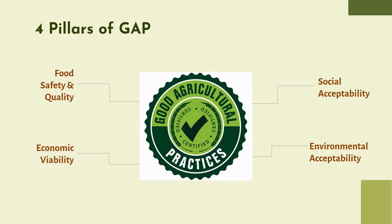Now, there are four pillars of GAP. First is food safety and quality. Second, social acceptability. Next, we have environmental acceptability. Last is economic viability. In further slides, we will be discussing these four pillars of GAP.